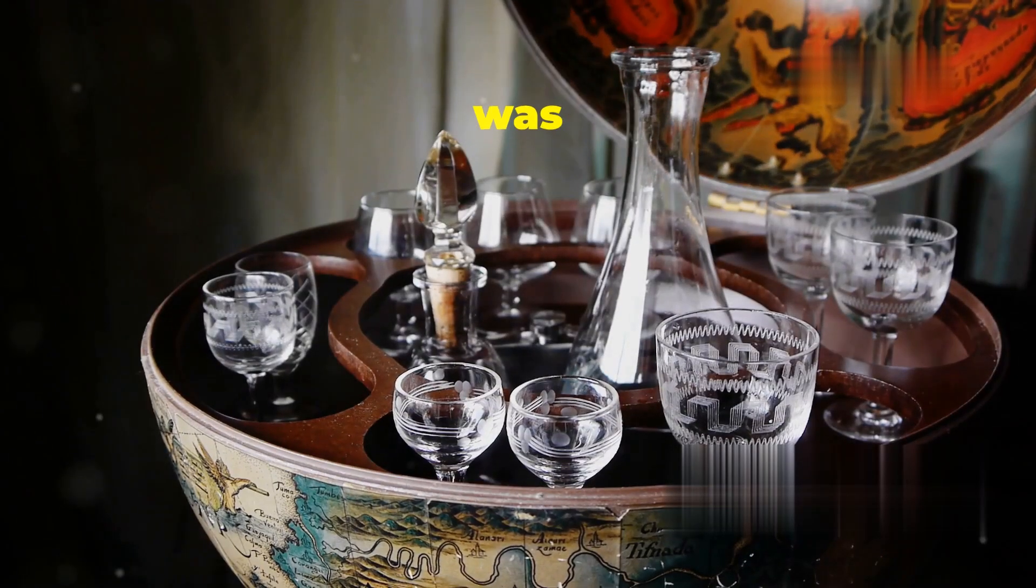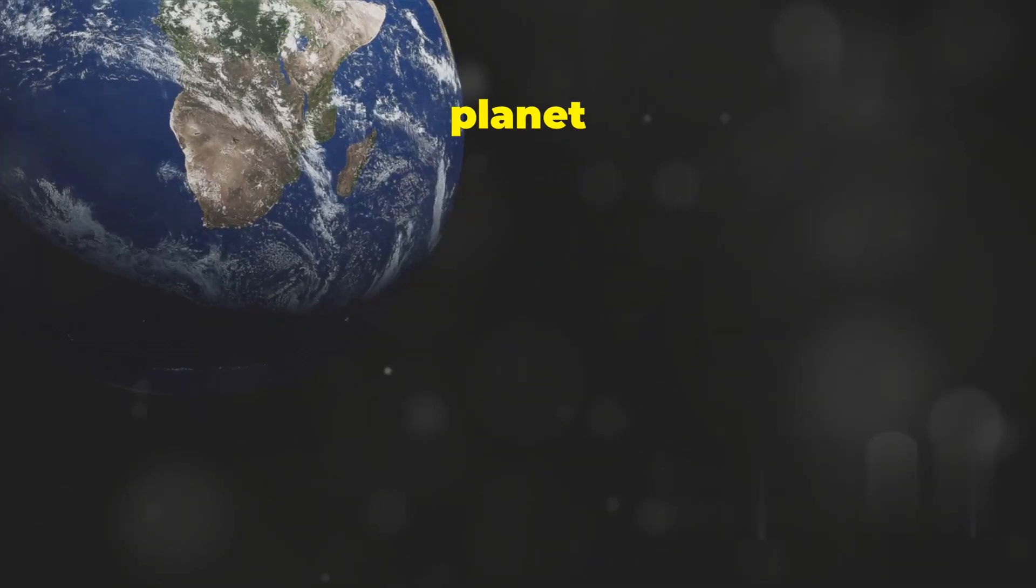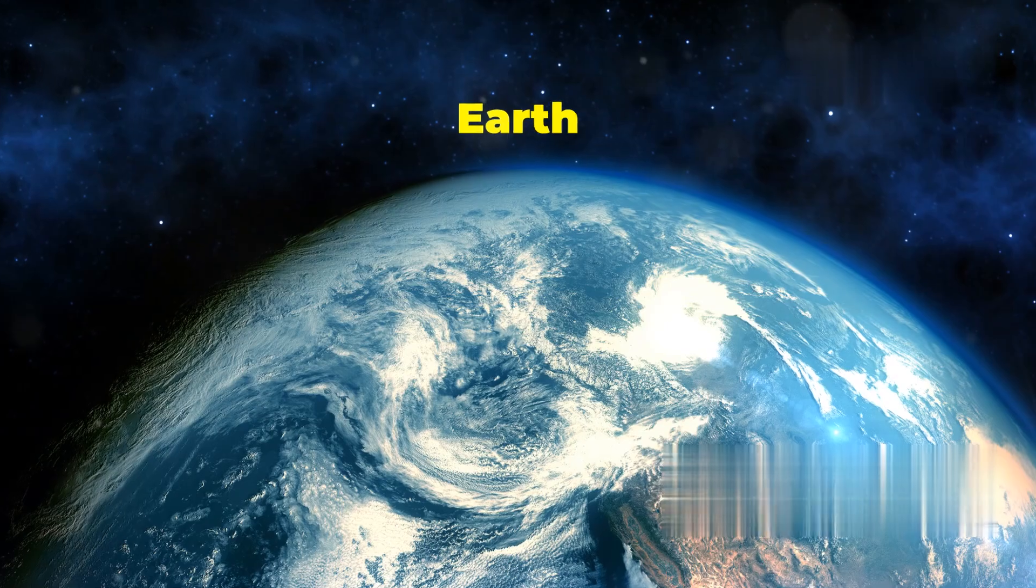For centuries, humans believed Earth was a perfect sphere. We pictured our planet as a uniform globe, but Earth is not perfectly spherical. It bulges at the equator and flattens at the poles.